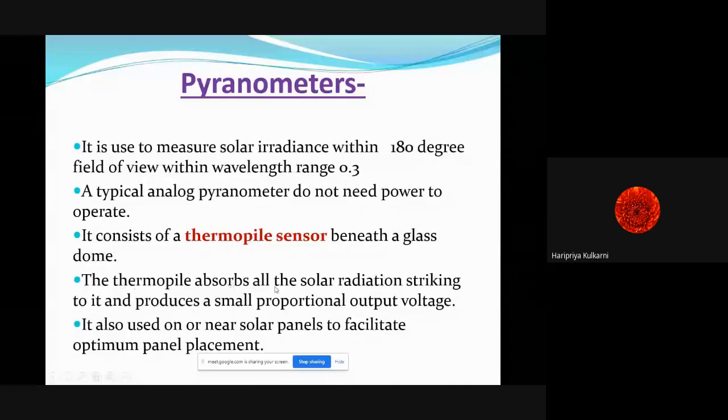The thermopile will absorb all the solar radiation striking on it, and the temperature difference is converted proportionally to the output voltage. It is placed near the solar panels to facilitate optimum panel placement. When placing solar panels on the rooftop, we can place a thermopile and check at which position we will get maximum efficiency, and accordingly placement is done.